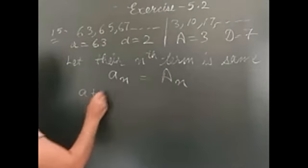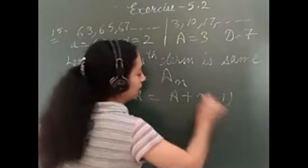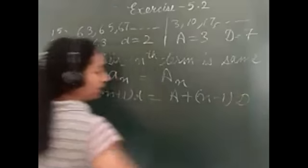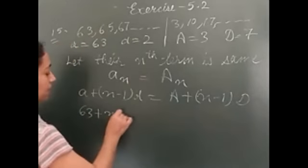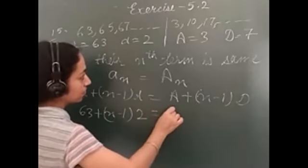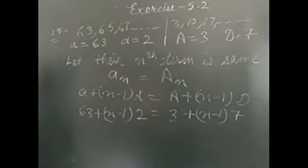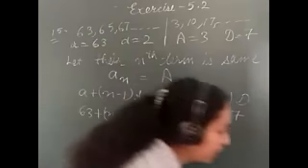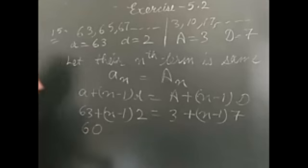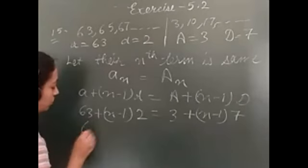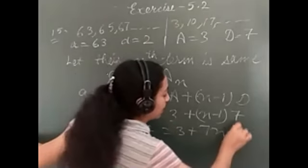Let we put the formula a plus n minus 1 multiply d. This is equal to A plus n minus 1 multiply D. The value of n we have to find out. Let we put the values: a is 63 plus n minus 1, d is 2. This is equal to capital A which is 3 plus n minus 1, D is 7. Simplify and find out n's value. Let's take... Let me first expand this. 63 plus 2n minus 2 is equal to 3 plus 7n minus 7.